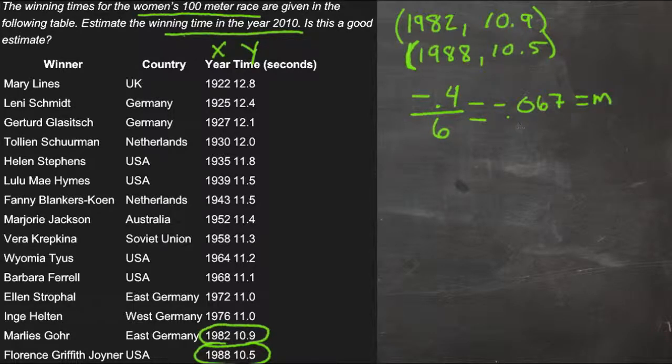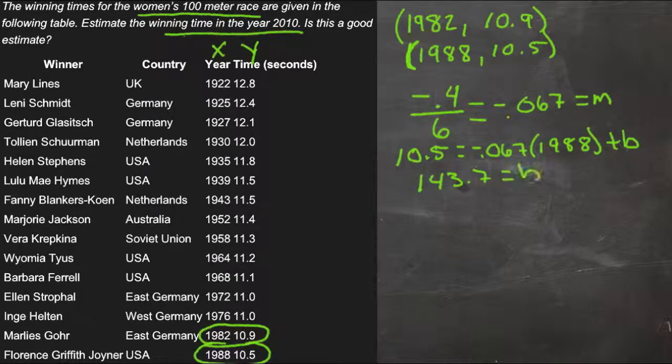and we can take that m and one of our points, and we'll use the 1988, 10.5 and figure out our b. So we have 10.5 in place of y is equal to negative 0.067 times x, which is 1988, plus b. Solve this, do the math, and we come up with 143.7 equals b.